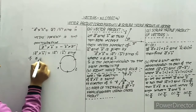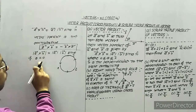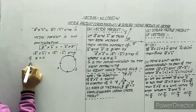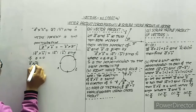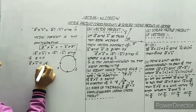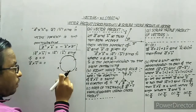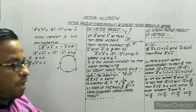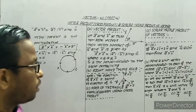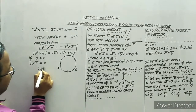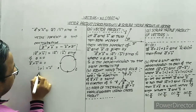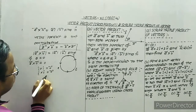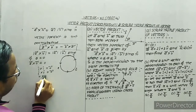Some observations: if θ equals 0, then sin(0) equals 0, so a cross b equals zero vector. That is why i cross i equals zero vector, j cross j equals zero vector, and k cross k equals zero vector, since the angle between identical unit vectors is zero.